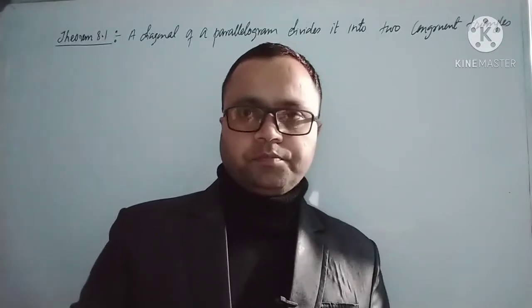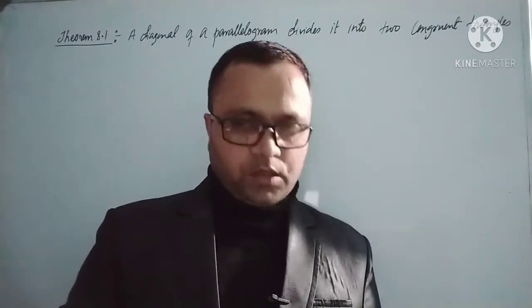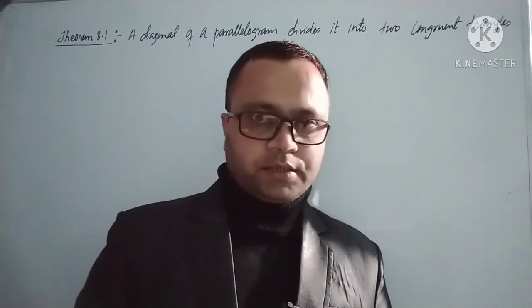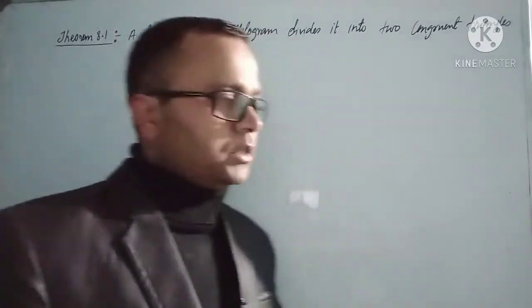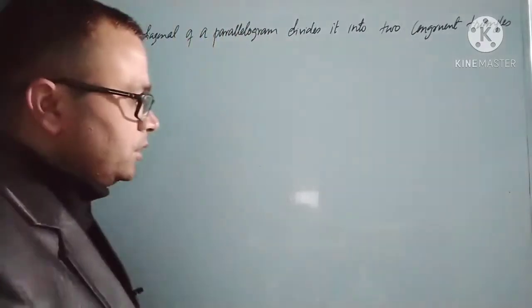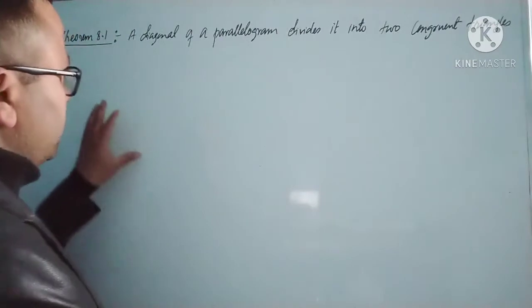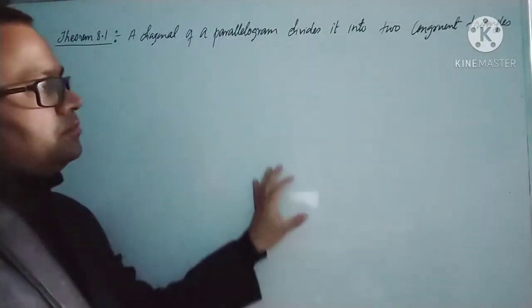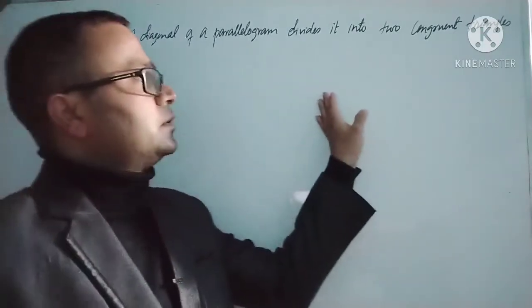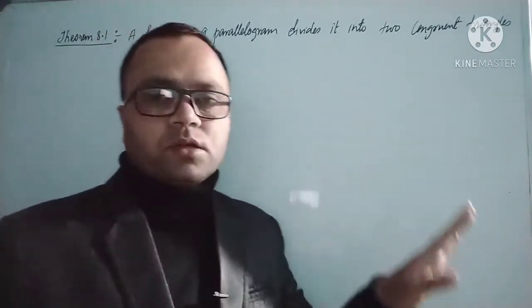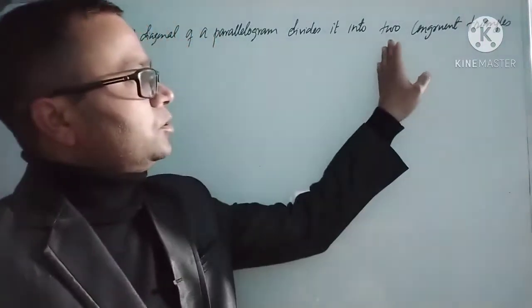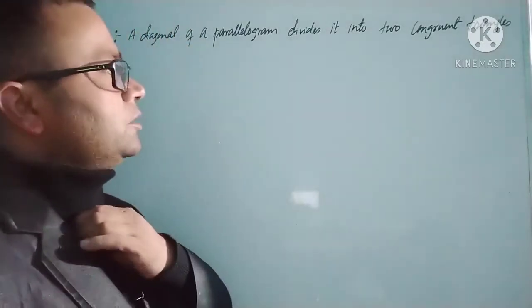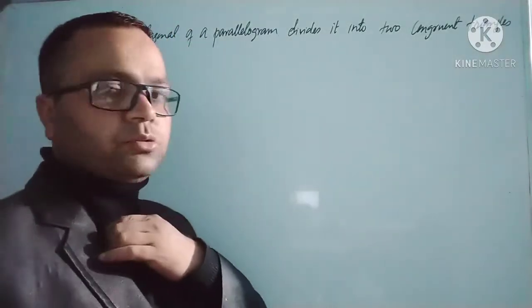Okay class 9, today we will be doing theorem 8.1 from the quantitative chapter. The statement of theorem 8.1 is: a diagonal of a parallelogram divides the parallelogram into two congruent triangles.